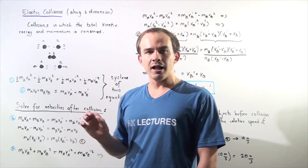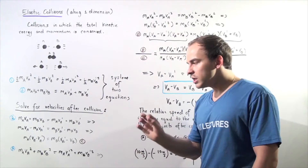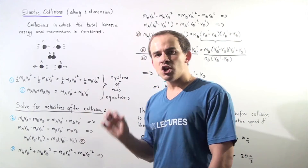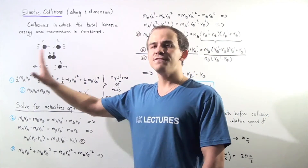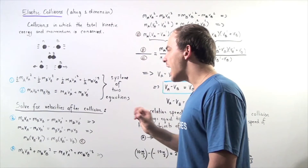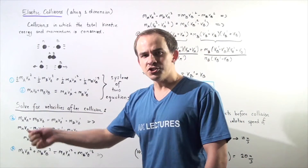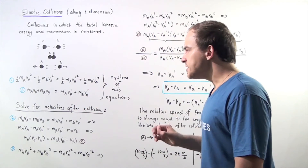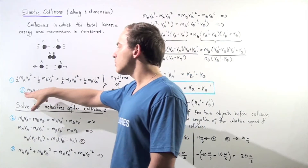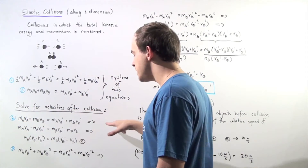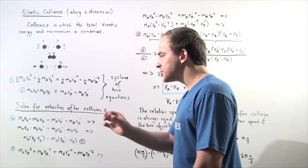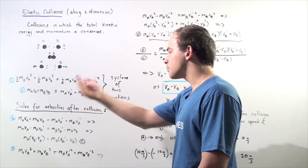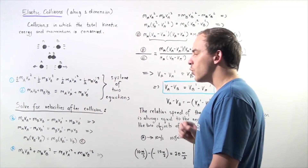We have a system of two equations, which means we can solve for two unknown variables. Suppose we know the masses of objects A and B and the velocities before the collision. We want to solve for the velocities after the collision — VA prime and VB prime. Let's begin by using equation two. We bring all the MA, VA, and VA prime terms to the left and everything else to the right, giving us a rearranged equation.